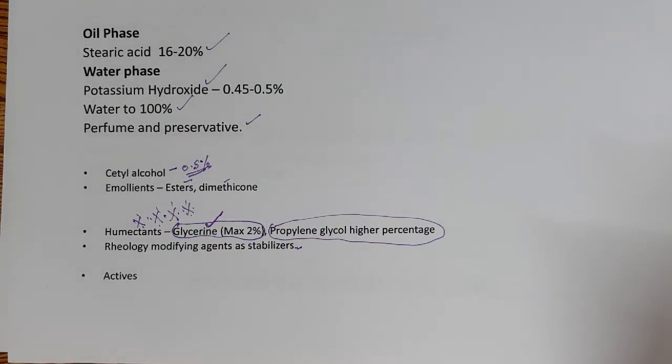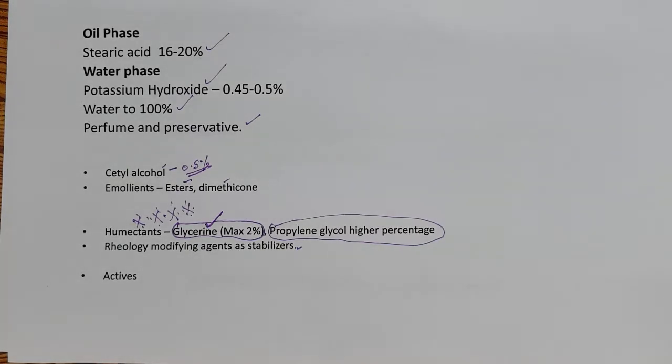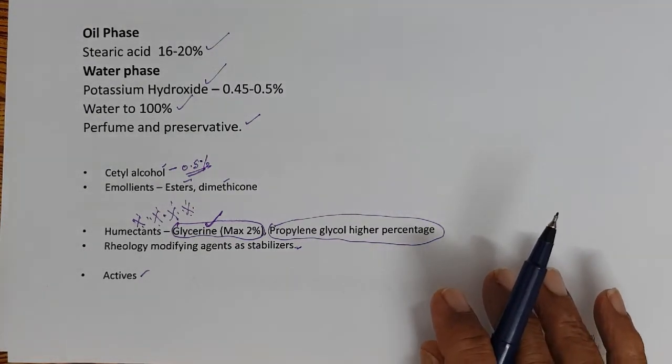You have to do trials, but very important here is humectant. Humectant is very important. A low level of cetyl alcohol is also okay. But adding emollient esters and rheology modifying agents, it has to be done in a careful way so that you get that pearliness right, consistency and pearliness right. Of course the actives are added.